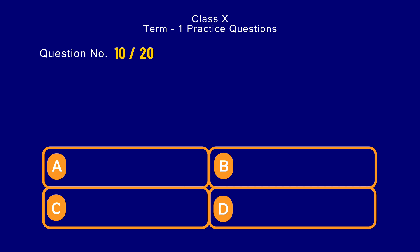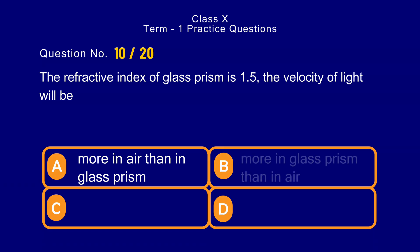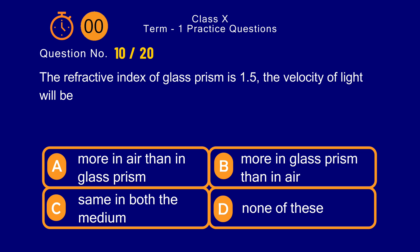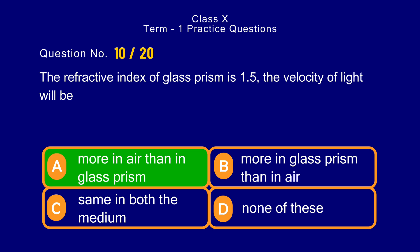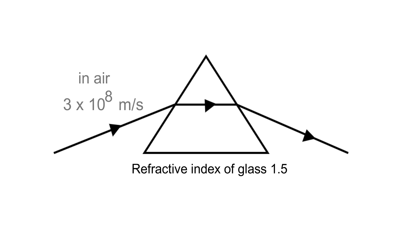Question number 10. The refractive index of a glass prism is 1.5. The velocity of light will be — options: a) more in air than in glass prism, b) more in glass prism than in air, c) same in both media, d) none of these. The correct answer is option a) more in air than in glass prism. Glass with refractive index 1.5 is denser than air. Denser the medium, less the speed of light in that medium. Thus the speed of light is more in air than in glass.